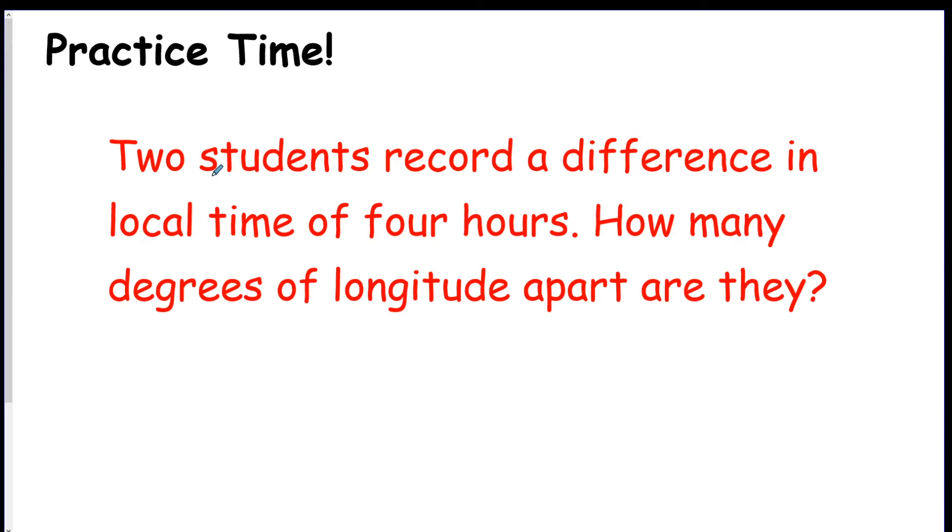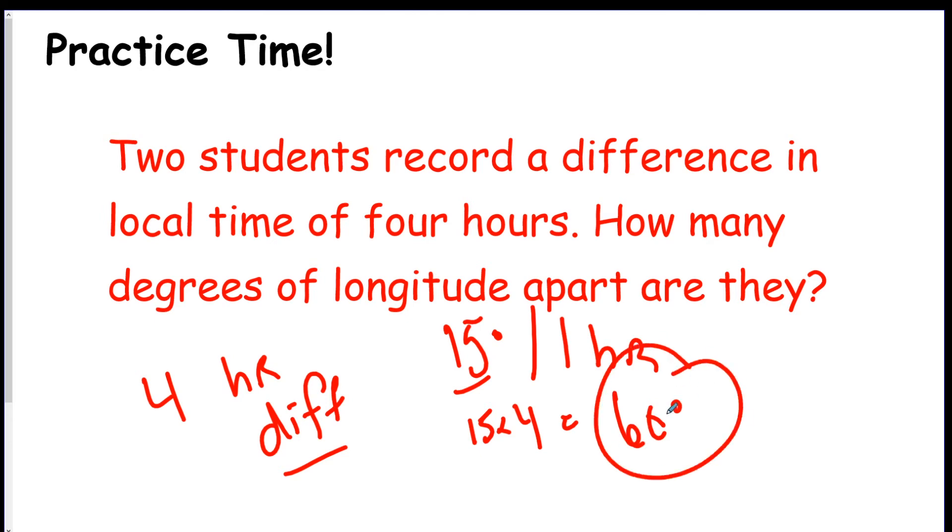So let's do a couple questions. Two students record a difference in local time of four hours. They have a four-hour difference. So the question is, how many degrees of longitude apart are they? Remember, it's 15 degrees per one hour. So if there's four hours difference, how many degrees are there? So if you do 15 times four equals 60 degrees, they're 60 degrees apart.